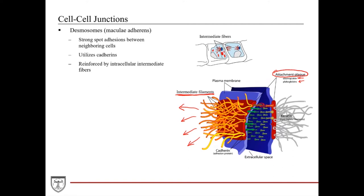I like to compare desmosomes to numerous Velcro spots present between two cell membranes, as opposed to the thin strip of Velcro that goes around the cell periphery like the zonula adherens. And much like Velcro, there's plenty of space in the paracellular aspect between the cell membranes. So desmosomes, much like the zonula adherens, are not very good at stopping paracellular transport of macromolecules — only the tight junctions can do that.